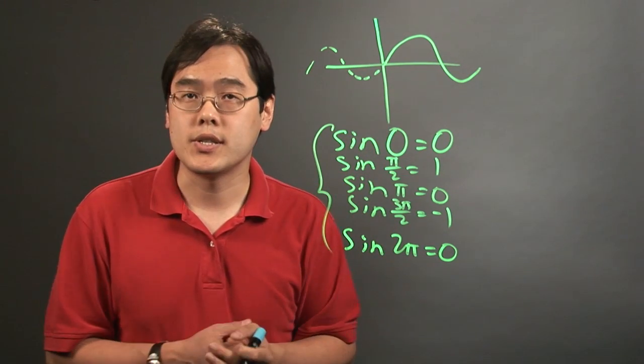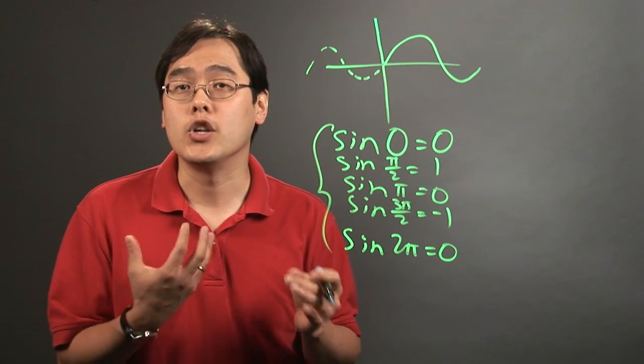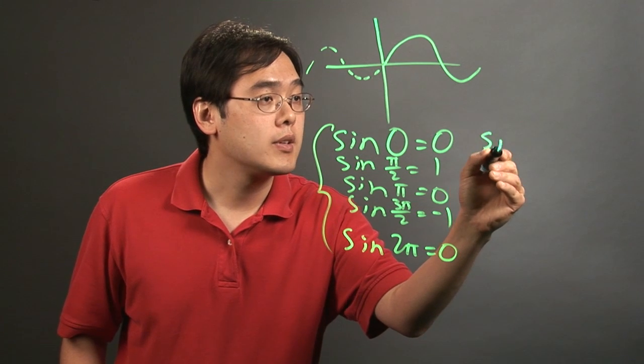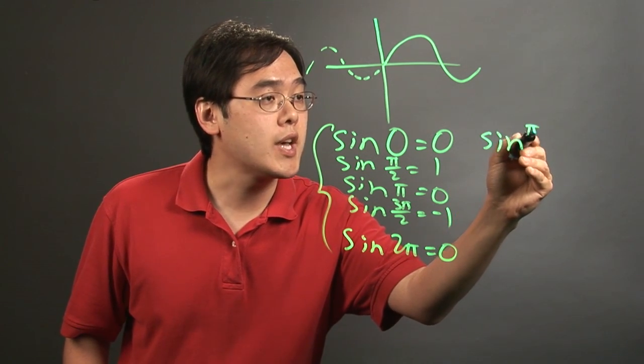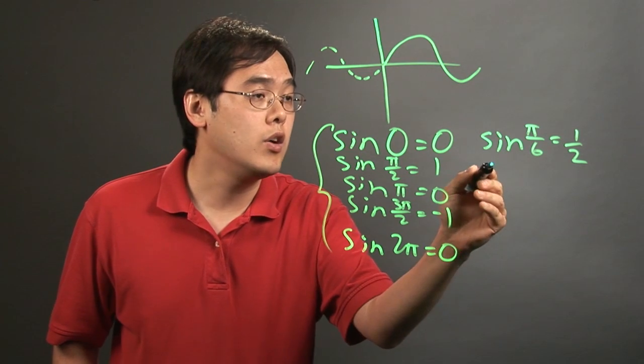There are also other sine values you want to think about because the angles are so common you'll use them regularly. That is sine of π/6, or 30 degrees, which gives you 1/2.